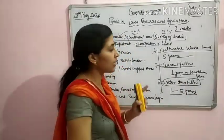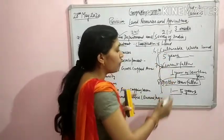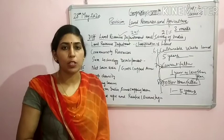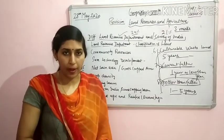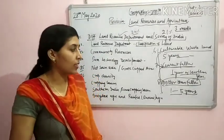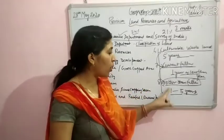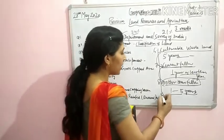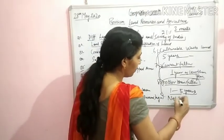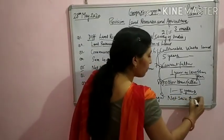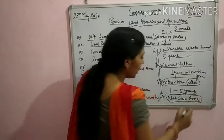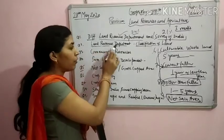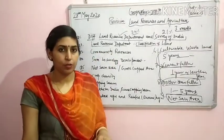So if we want to increase agriculture, we can utilize all three of these. India has 57% area on which 53% population depends for cropping and cultivation. So if we want to increase the area, we can utilize these three. And the last one is net sown area — where agriculture is currently being done. So these are the nine classifications according to the Land Revenue Department.